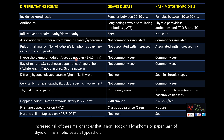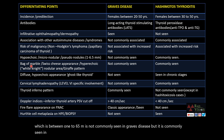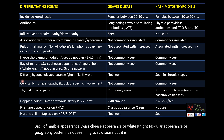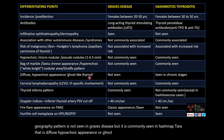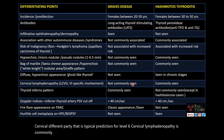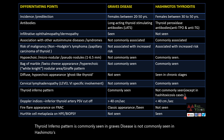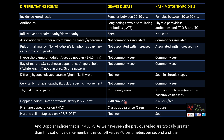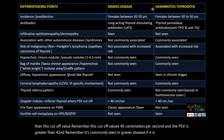Hypoechoic micronodular or pseudonodular pattern (1–6.5 mm) is not commonly seen in Graves disease but is common in Hashimoto's. Bag of marbles, Swiss cheese, white knight nodular appearance, or giraffe pattern are not seen in Graves disease but are commonly seen in Hashimoto's. Diffuse hypoechoic or ghost-like thyroid gland is seen in chronic Hashimoto's but not in Graves. Cervical lymphadenopathy with predilection for level 6 nodes is common in Hashimoto's, not in Graves. Thyroid inferno pattern is classically seen in Graves disease, not in Hashimoto's except in Hashitoxicosis. The PSV cutoff for the inferior thyroid artery is 40 cm/sec — PSV greater than 40 cm/sec favors Graves disease, less than 40 cm/sec favors Hashimoto's thyroiditis.